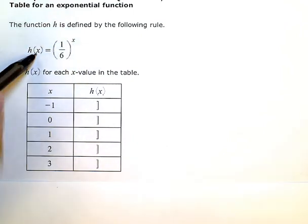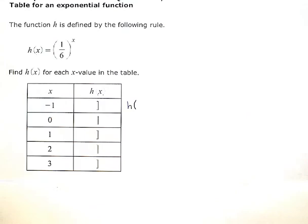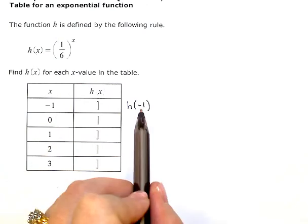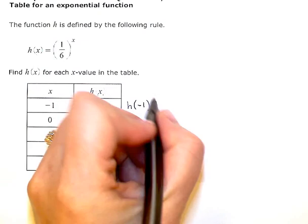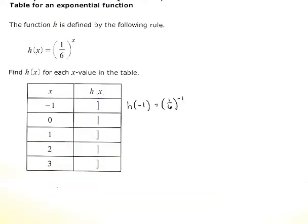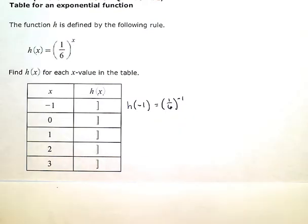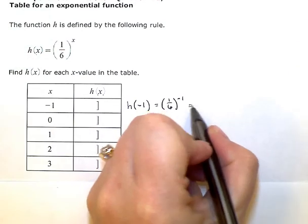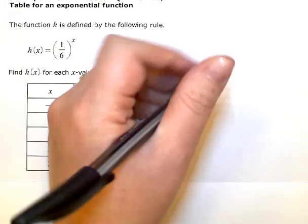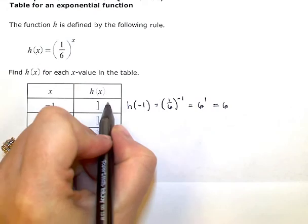The x's are the inputs — they go into the function. So if I wanted to evaluate the function h at negative 1, I'm putting negative 1 into the function in place of x. So that would give me 1 sixth to the negative 1 power. Remember, negative exponents mean that we flip the fraction or write the reciprocal. So this would be 6 — 1 sixth flipped over would be 6 over 1, or just 6. So this first value is 6.